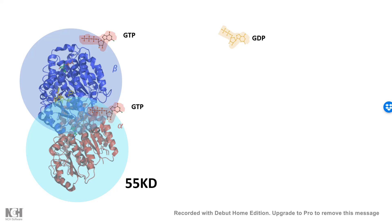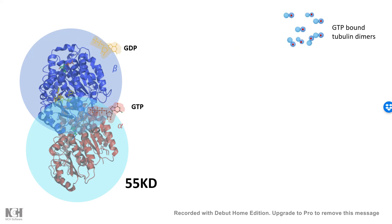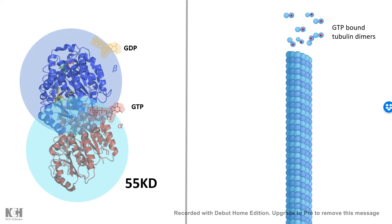The microtubule constituent tubulin has GTP binding sites at the interface of alpha and beta-tubulin. This GTP is non-hydrolyzable, whereas there is another GTP bound to the beta-tubulin which is hydrolyzable. This hydrolyzable GTP has consequences: whenever beta-tubulin is GTP-bound, it can add new subunits to the growing plus end of the microtubule and help it polymerize. But when GTP is hydrolyzed to GDP, the microtubule starts falling off and depolymerizing.